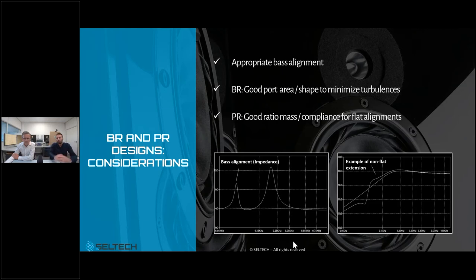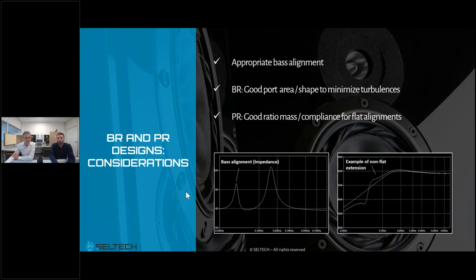For passive radiators, a major point is to maintain a good ratio between the mass of the passive diaphragm and its compliance, and also to pay attention to the compliance ratio of the air inside the box. Otherwise, you will not achieve a flat alignment — as illustrated in the example where the alignment is not flat at all.